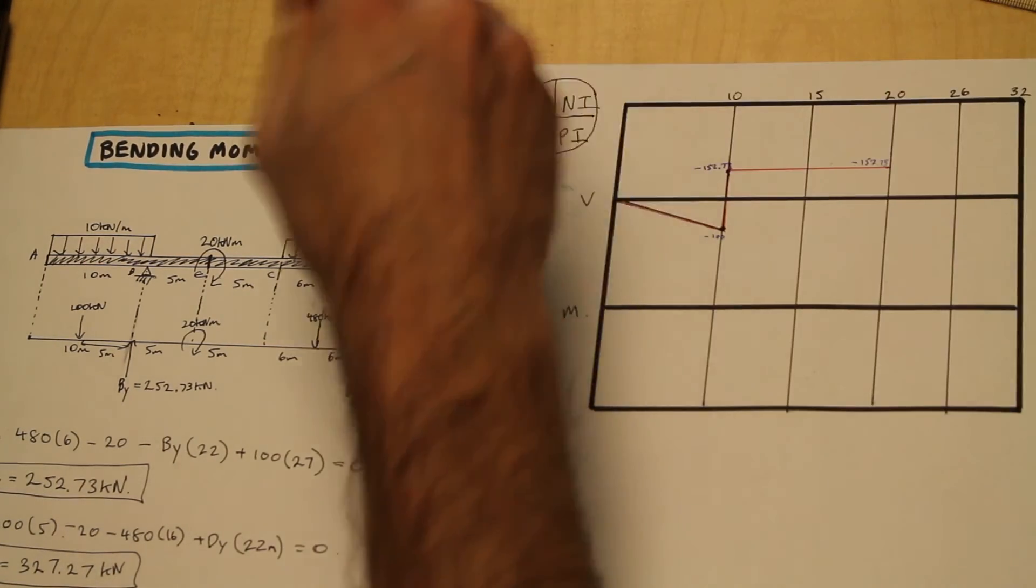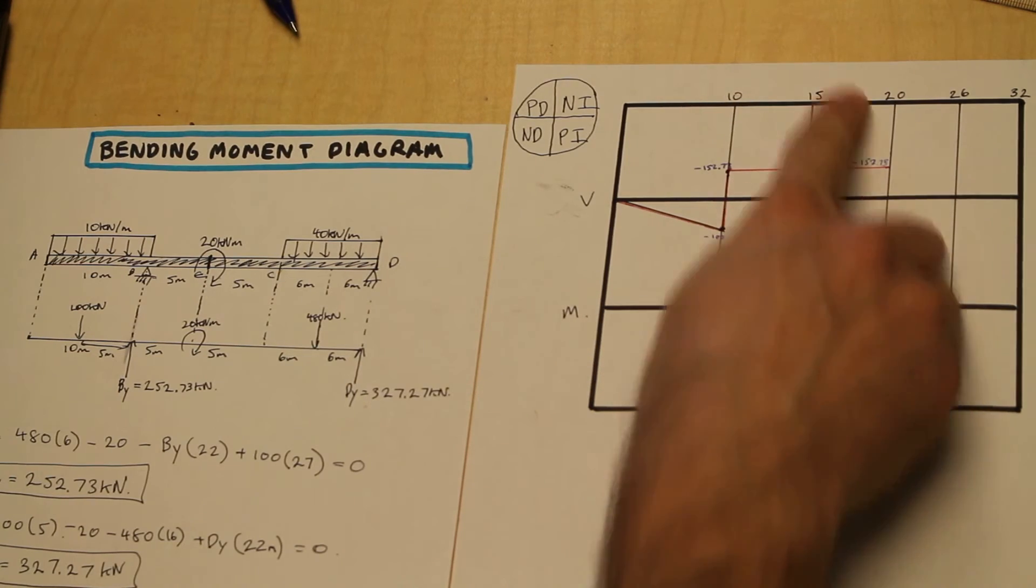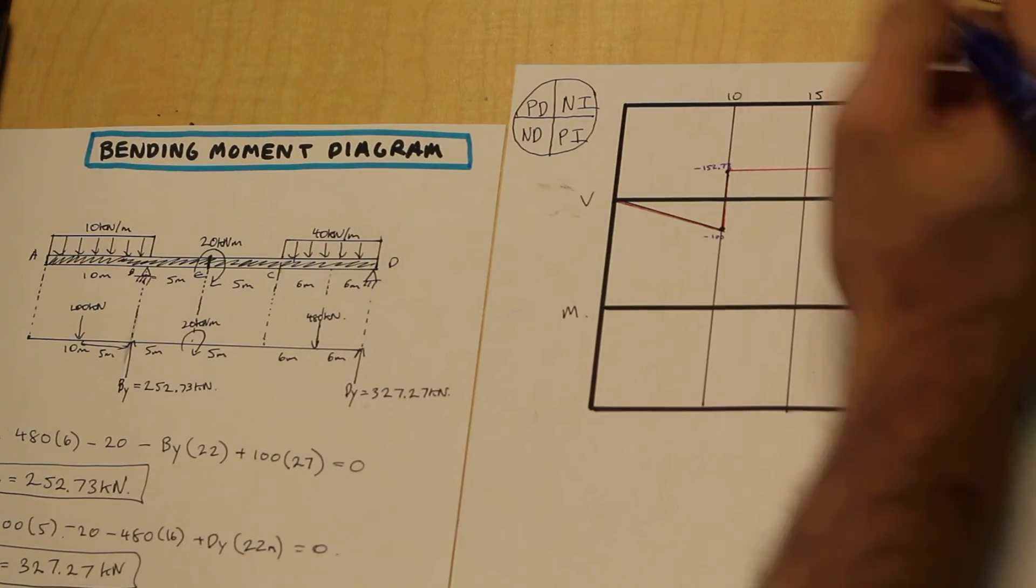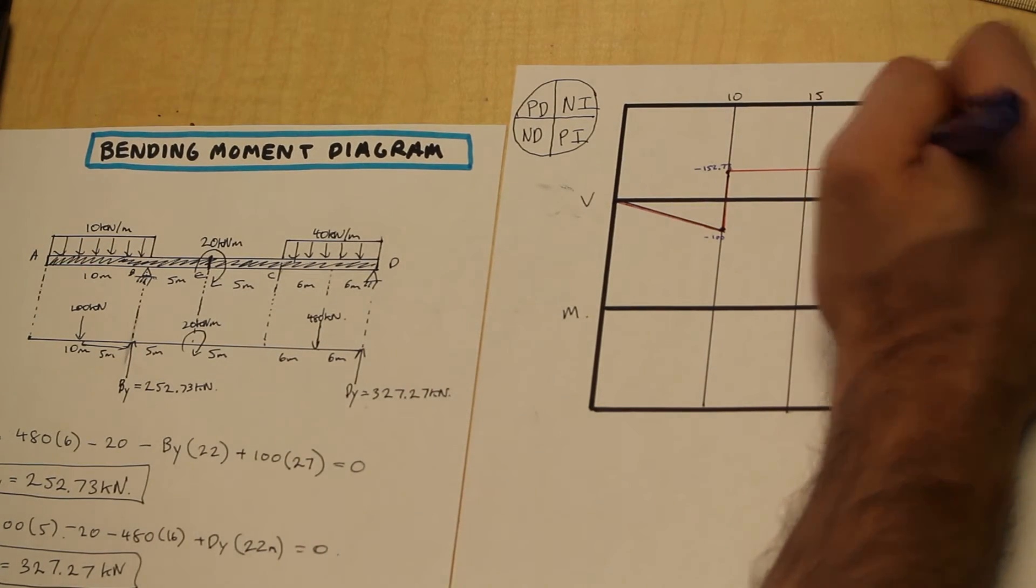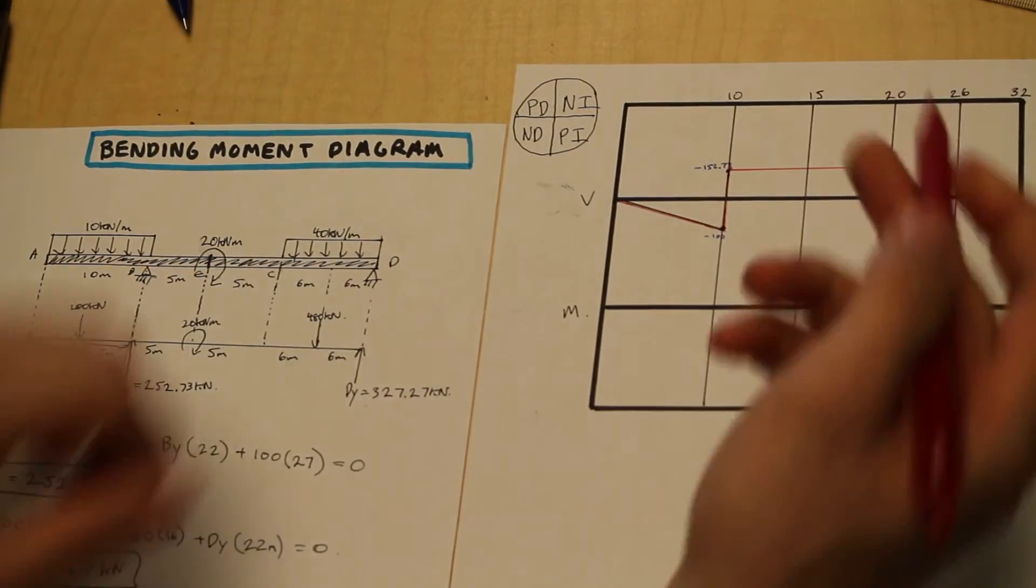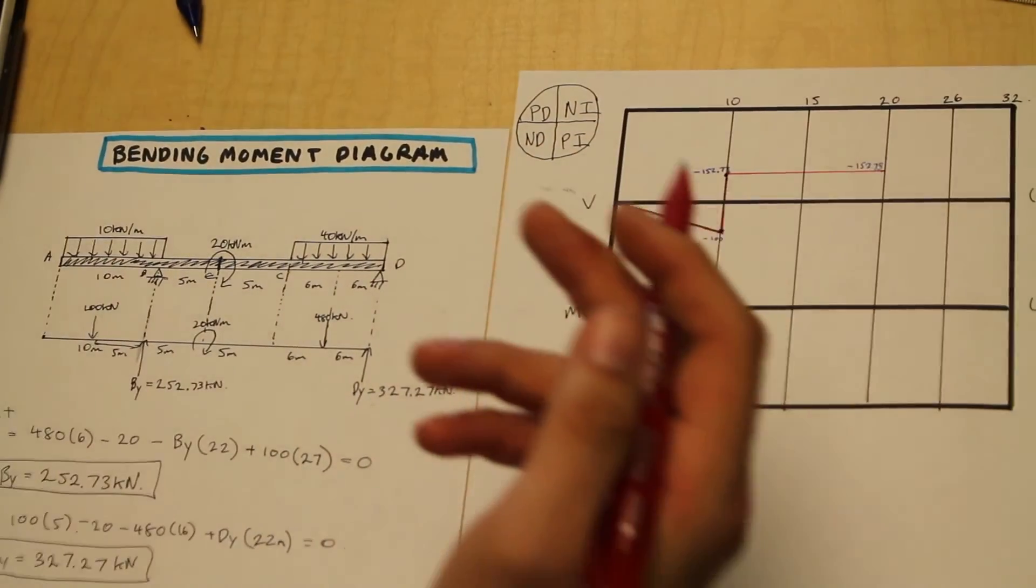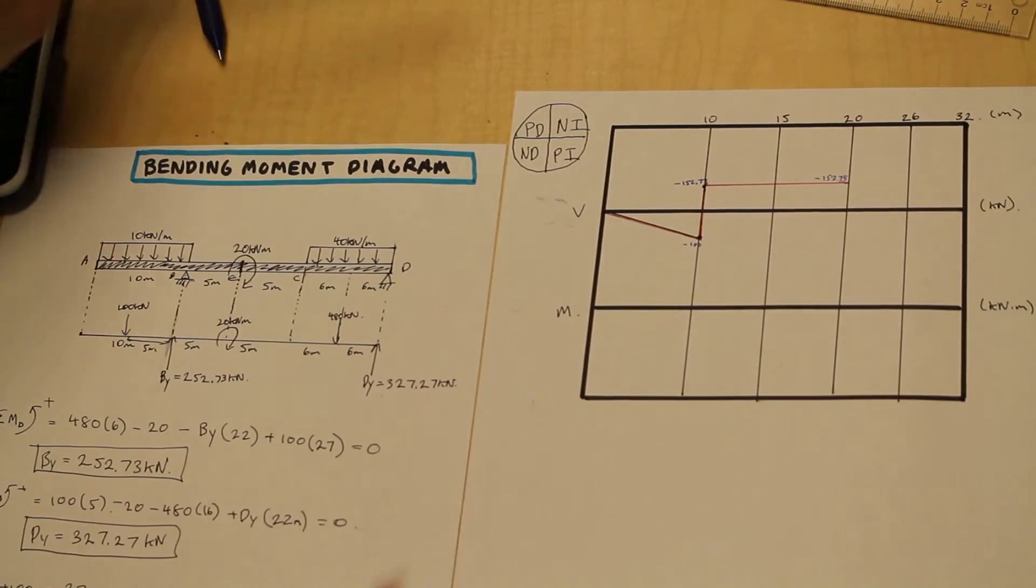And it's the same value. It doesn't change. 152.73. And that's where these lines really come in hand, you guys. These lines here that I've drawn, it helps you keep everything to scale. And I'll show you a couple reasons why that's important shortly.